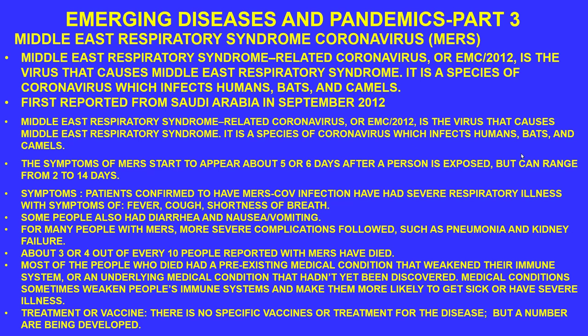Some patients also had diarrhea, nausea, and vomiting. More severe complications include pneumonia and kidney failure. About three or four out of every 10 people reported with MERS have died — a mortality rate of 30 to 40 percent. Most who died had a pre-existing medical condition such as respiratory disorders, COPD, kidney problems, cardiovascular disease, or weakened immune function.